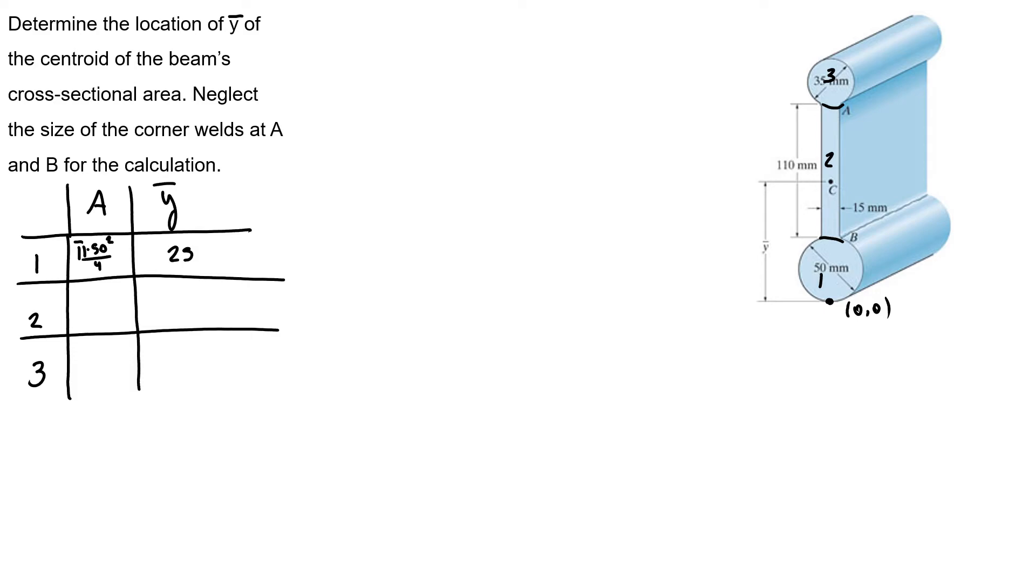Number 2, I know my area is 110 times 15, and then my y-bar will be 50 plus 55. 55 is 110 divided by 2, which is half.